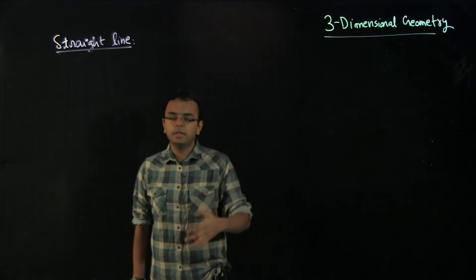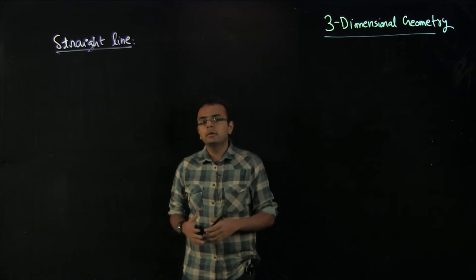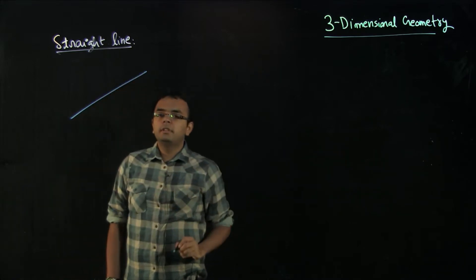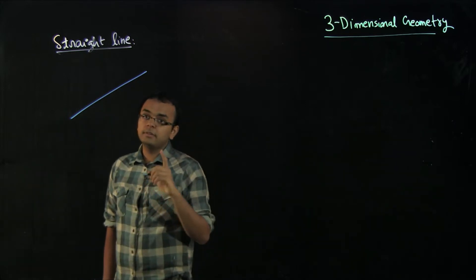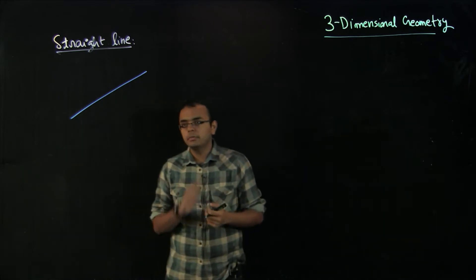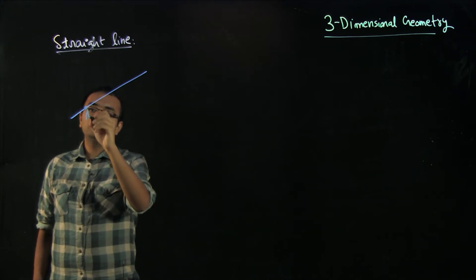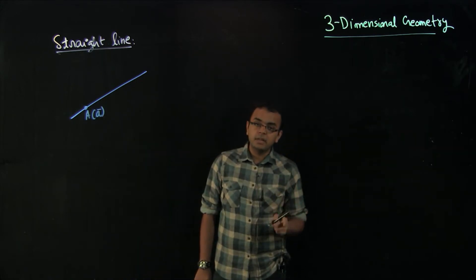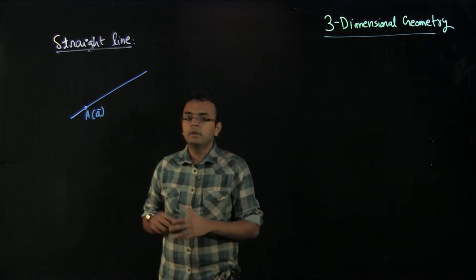Let us start by defining the topic of straight lines and develop the whole topic in this video. We have a line in 3D, so you can imagine it has an x component, y component, and z component. We have point A, and when I write vector A, that means it is a position vector — their coordinates. We have discussed this in detail in our previous chapter of vectors.